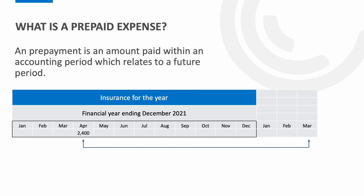This means that included within the £2,400 we have insurance related to three months of the following financial year. When preparing the accounts this would need to be deducted from the financial year end 2021 and moved into the following financial year which the expense actually relates to. Prepaid expenses are shown as a current asset in the year end statement of financial position, representing that we have paid for goods or services and lowered the amount in our bank account, but the business is still owed those goods or services.